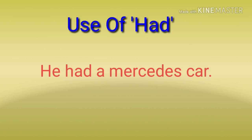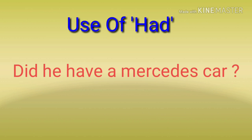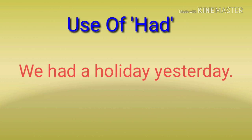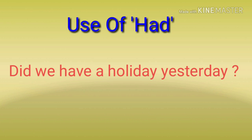A question would be: kya uske paas Mercedes car thi? — 'Did he have a Mercedes car?' Or a negative sentence: uske paas Mercedes car nahi thi — 'He didn't have a Mercedes car.' Let's see some more examples. Kal hume chutti thi — 'We had a holiday yesterday.' Kya kal hume chutti thi? — 'Did we have a holiday yesterday?'